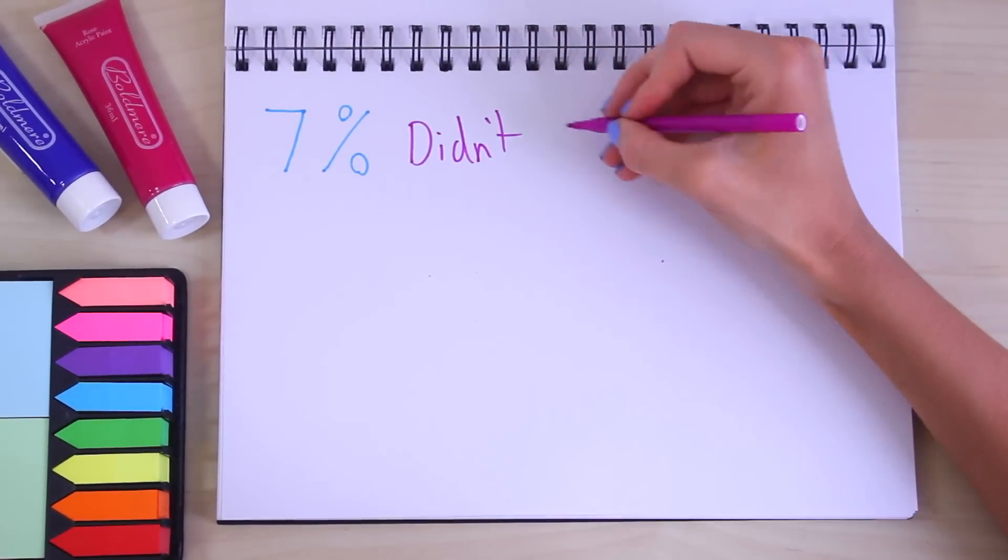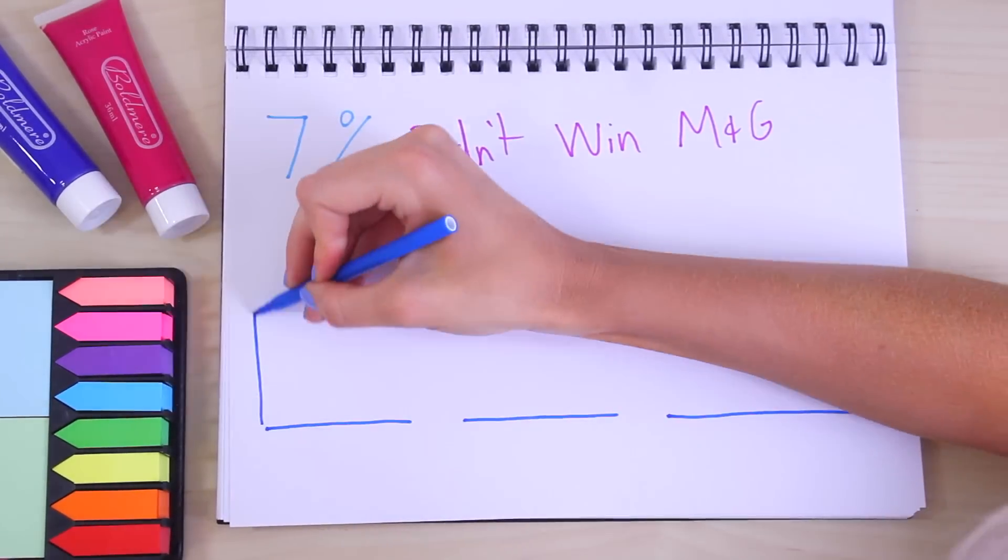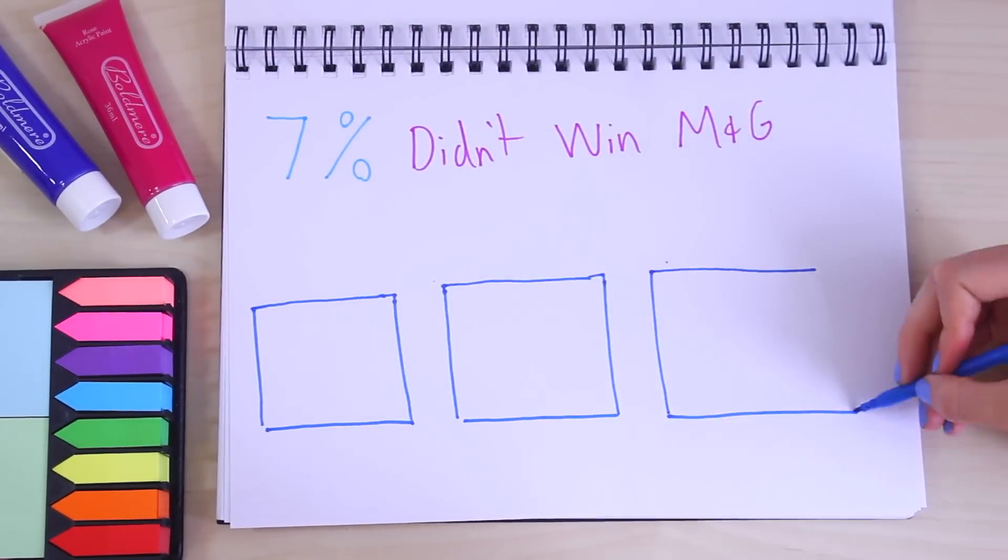7% of people who entered the ballot entries did not actually win a meet and greet. It's not 50% or like half the people like people have been blowing it up on Twitter. It is actually just 7% and there's 3 main reasons for why this happened.